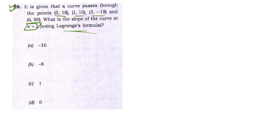We have been told to solve this using the Lagrange formula only. So using the Lagrange formula, we simply need to find the function f(x), then differentiate it with respect to x, and put the value x = 2 to find the slope of the curve.